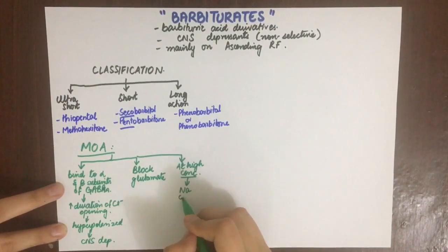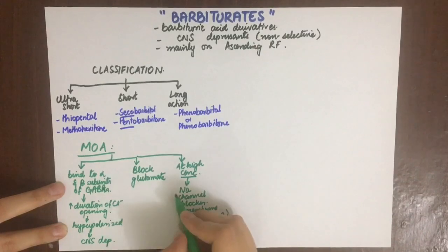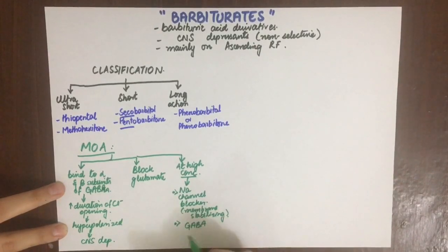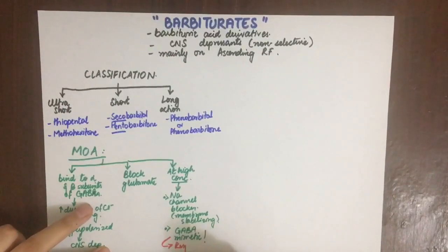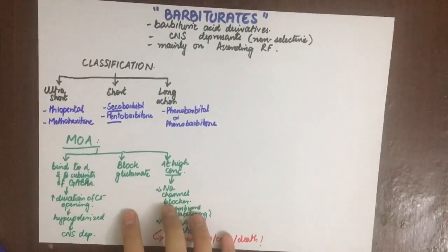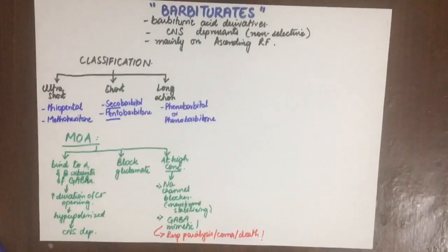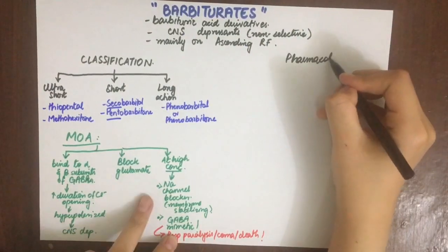At high concentrations, barbiturates also block sodium channels — they prevent the channels from depolarizing, giving them membrane-stabilizing effects like anesthetics. At high doses, they also have GABA-mimetic effects, meaning they no longer need GABA to stimulate the GABA-A receptors. This leads to high toxicity, resulting in respiratory paralysis, coma, and death.